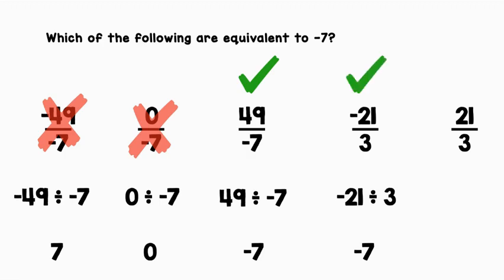21 over 3 can be rewritten as 21 divided by 3, which equals positive 7. So we're going to cross that one out.